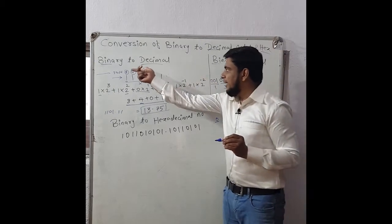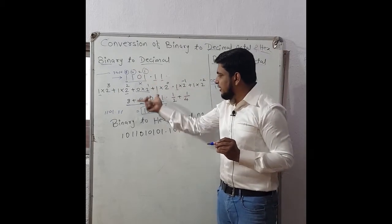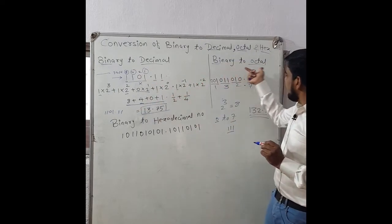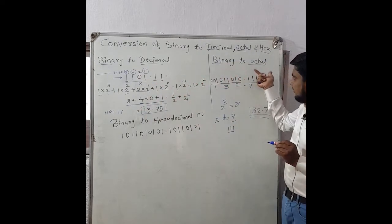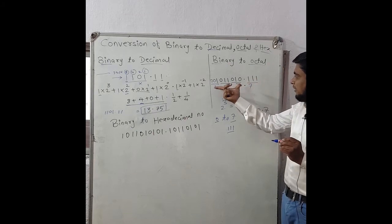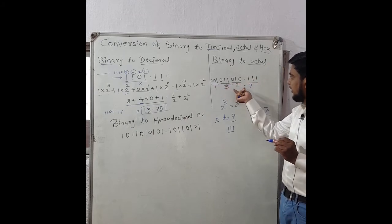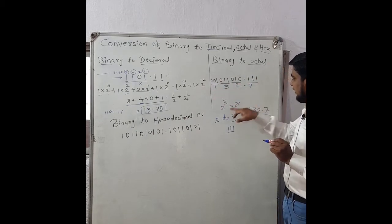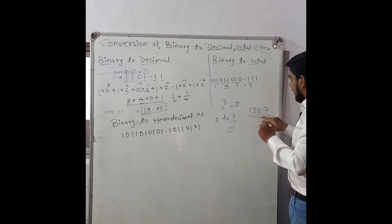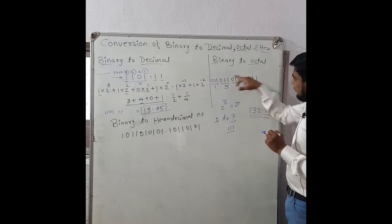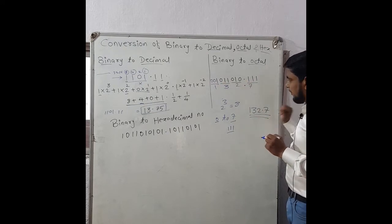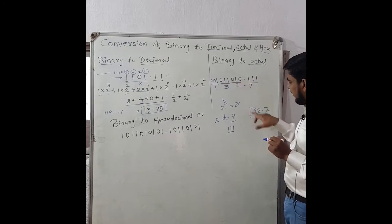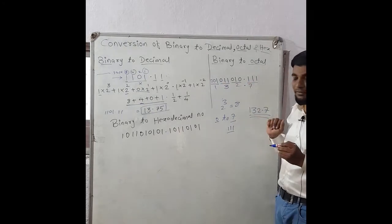In this way binary to octal conversion works. Whatever binary number is given, make a group of three bits and convert each group into its decimal equivalent. In this way you can convert any binary number into its octal equivalent.